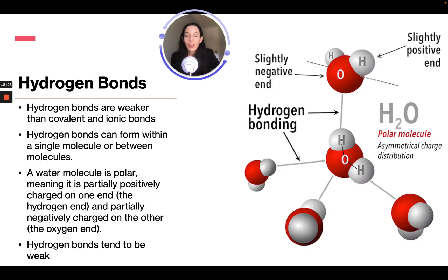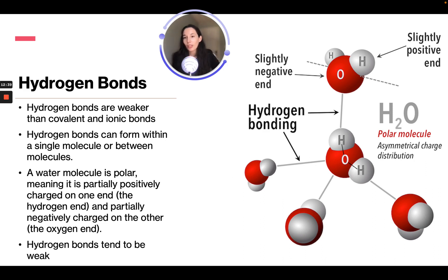Hydrogen bonds are weaker than covalent and ionic bonds. They can form within a single molecule or between molecules. A water molecule is polar — partially positive at one end and partially negative at the other — and hydrogen bonds tend to be weak.